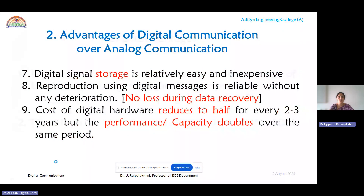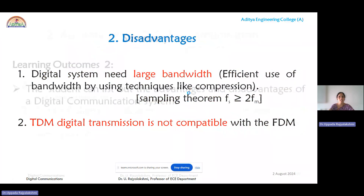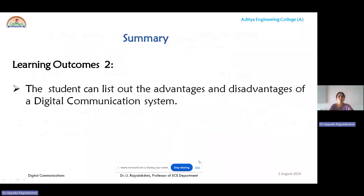The main drawback of digital signals is their large bandwidth requirement. The system needs a large amount of channel bandwidth for digital signal transmission, making it unsuitable for frequency division multiplexing of multiple signals. Time division multiplexing is therefore preferred as a digital data transmission technique. In this module, we discussed the various advantages and disadvantages of the digital communication system. In the next module, we will discuss the elements of pulse code modulation. Thank you for listening.